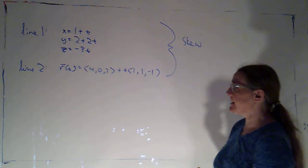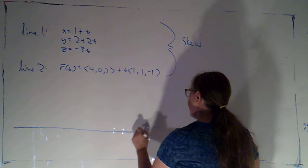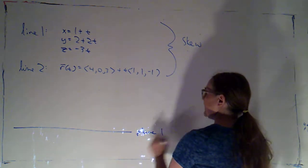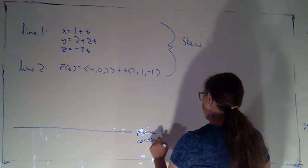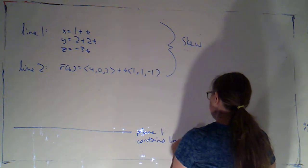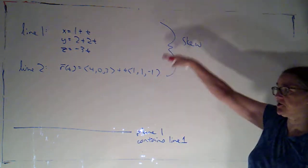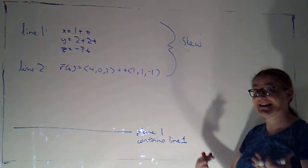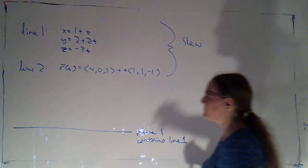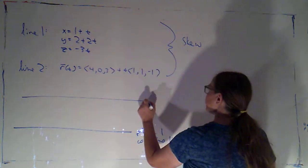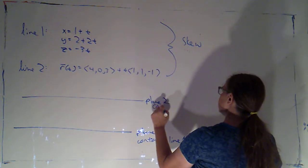So I'm going to draw myself a picture. I'm going to say this is plane one, and plane one contains line one. Now I don't have an equation for the plane, but since these lines are skew, I know that parallel planes that contain them exist — that's all I need right now. And then I'm going to say this is plane two, and it contains line two.